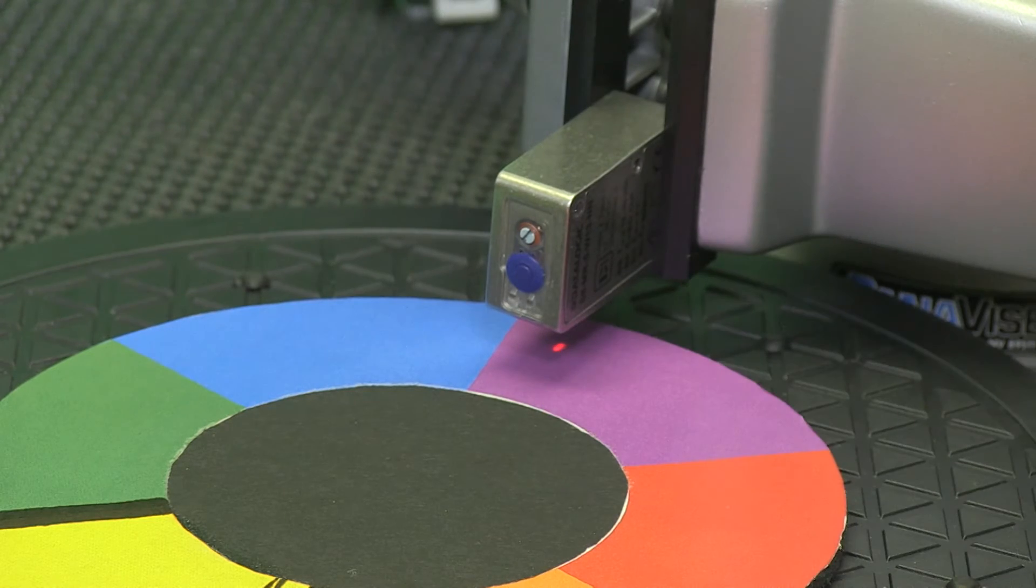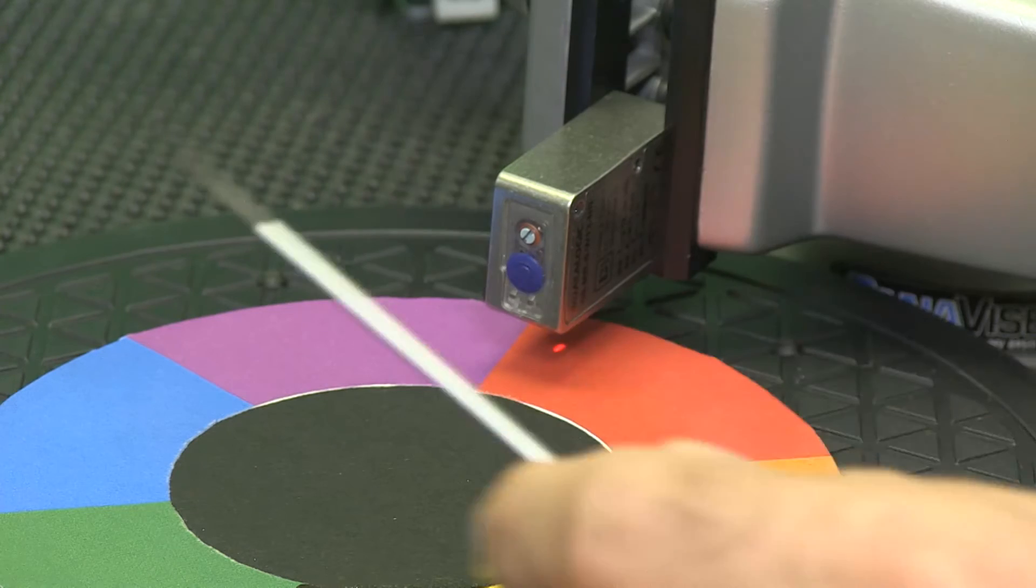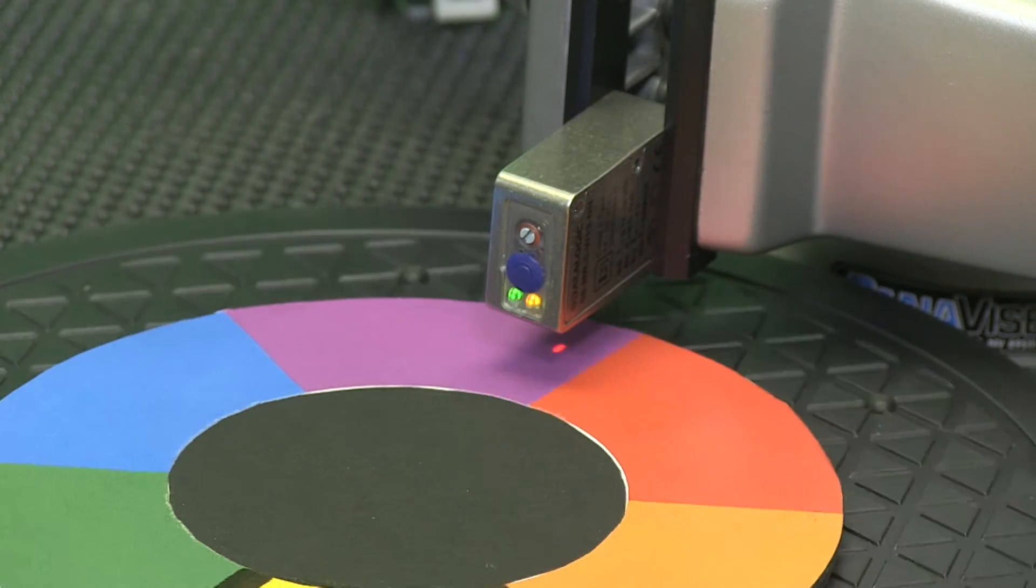In this how-to video I will demonstrate how to set up background and targets with the DataLogic contrast sensors that we sell here at AutomationDirect.